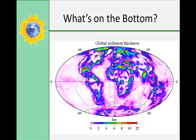Ocean sediments are classified according to their origin into four categories: terrigenous sediments, biogenous sediments, hydrogenous sediments, and cosmogenous sediments. Terrigenous — terra means earth, genus means to produce — so these are sediments that originated from the continent itself. Biogenous — bio means life — are the second most abundant marine sediments, consisting of shells and skeletons of marine animals and algae. There are two types: calcareous ooze, made from calcium carbonate shells, and siliceous ooze, made from shells containing silica, such as radiolarians and diatoms.